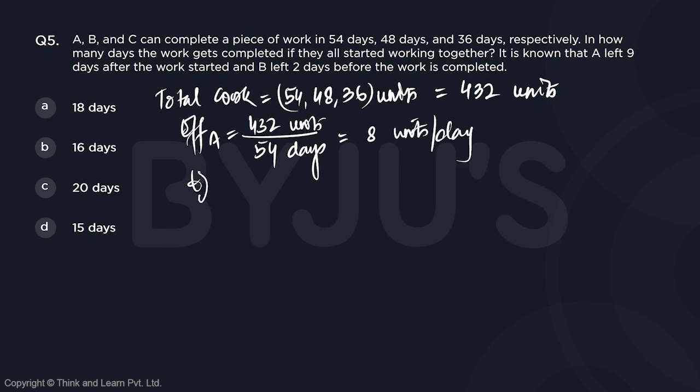Similarly, efficiency of B is going to be 432 units divided by the number of days it worked. So 48 into 9 is 432, so 9 units per day.